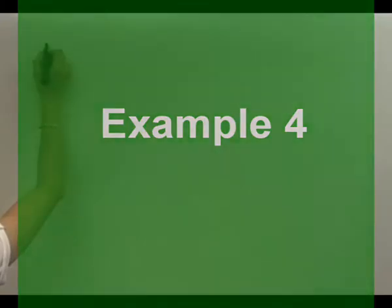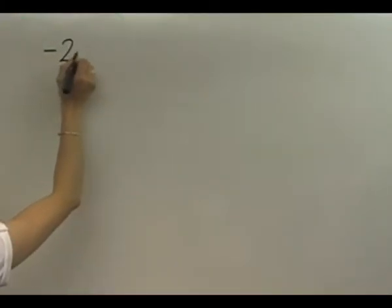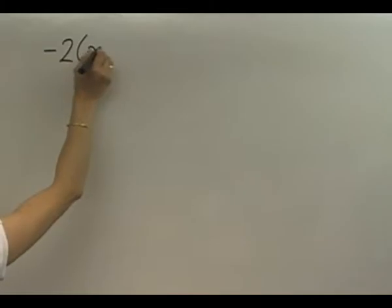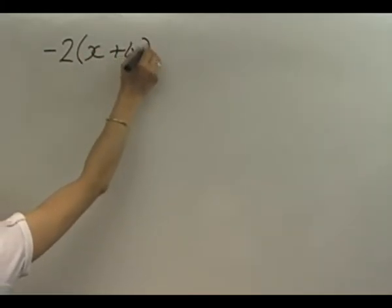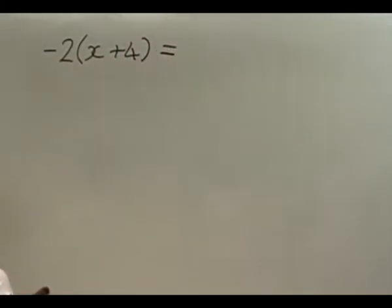The next example: negative 2 open bracket x plus 4 close bracket. Got to be careful here because it's negative 2 outside the brackets. What a lot of people do is forget the negative outside and pretend it's not there. If you do that, you're going to get the answer wrong.